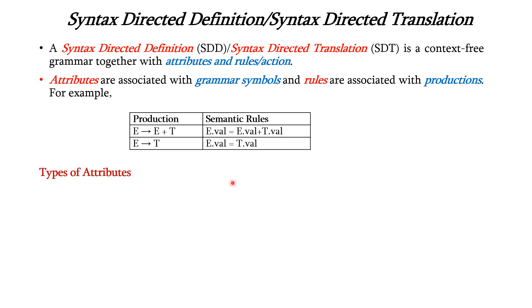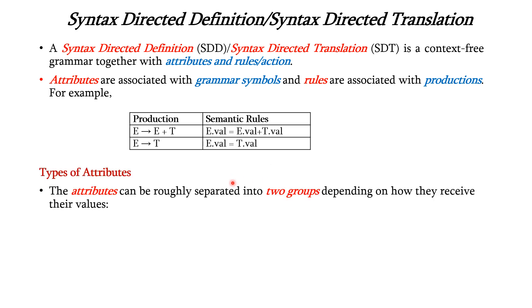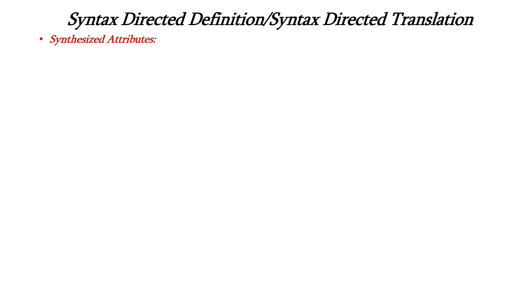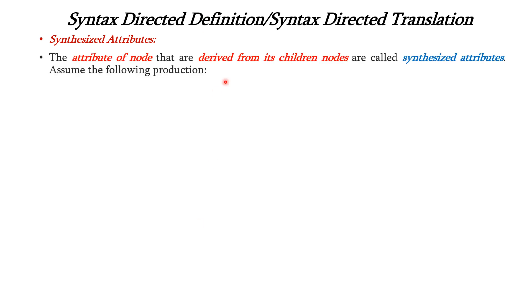Now let us see the types of attributes. Attributes can be categorized into two groups depending on how they receive their values. The first one is synthesized attribute and the second one is inherited attribute. First we will see about synthesized attributes. The attributes of a node that are derived from its children nodes are called synthesized attributes.